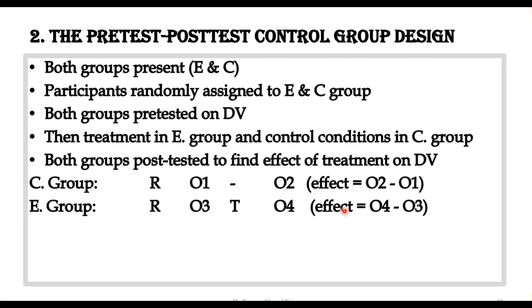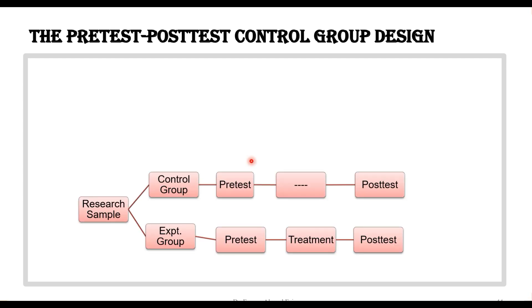We then find the individual change in each group. The change in the control group is found by O2 minus O1, while the change in the experimental group is found by O4 minus O3. After finding these, we subtract the two to find the exact effect of the treatment.